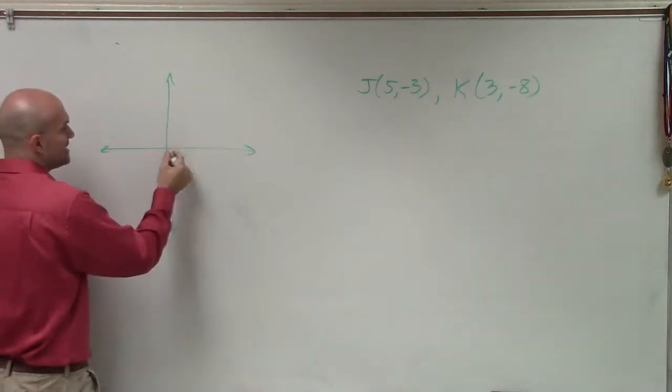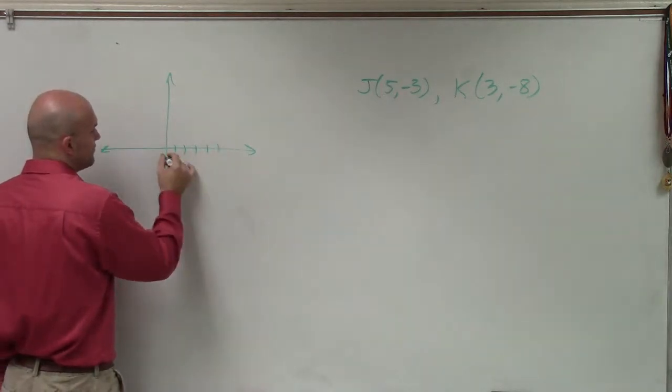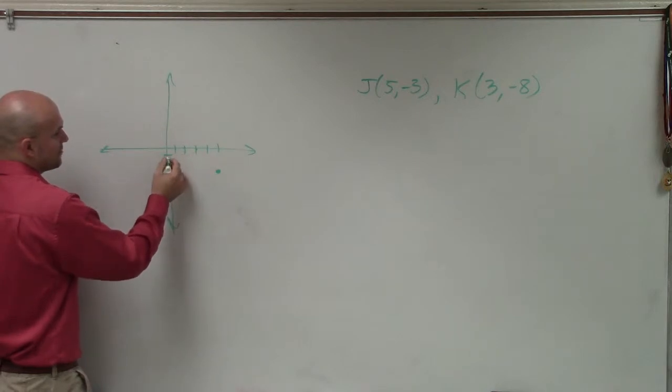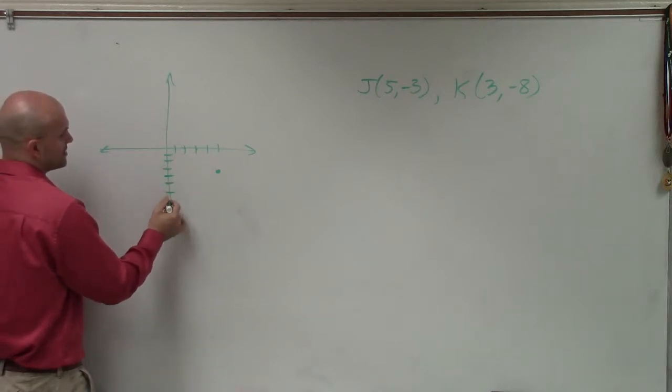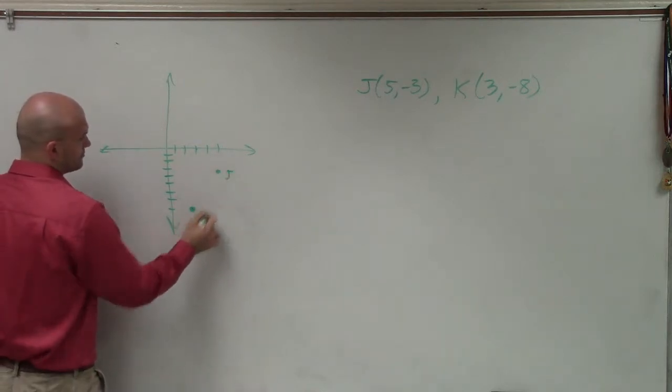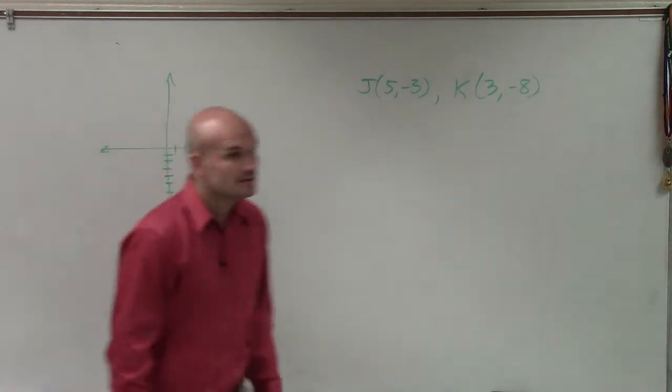So right now, I have J is at 1, 2, 3, 4, 5, 1, 2, 3. So J is at 5, negative 3. And K is at 1, 2, 3, negative 8. 1, 2, 3, 4, 5, 6, 7, 8. Right? Yes?